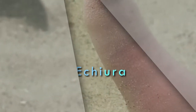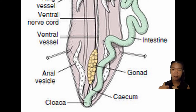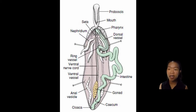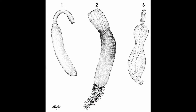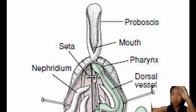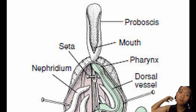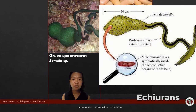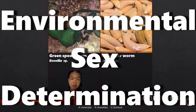Echiurans are recognized by anal sacs connected to their anus — muscular structures with some pumping action. They are not segmented as adults, yet they are placed under annelids because they still possess setae. They have a shovel-like proboscis that protrudes and cannot be retracted, used for feeding — which is why they're commonly known as spoon worms. The specimen shown is female because echiurans are sexually dimorphic — males are tiny and live inside the female solely to produce sperm.